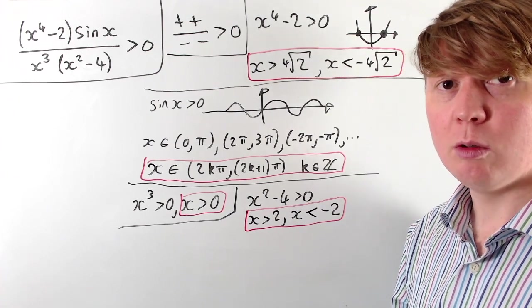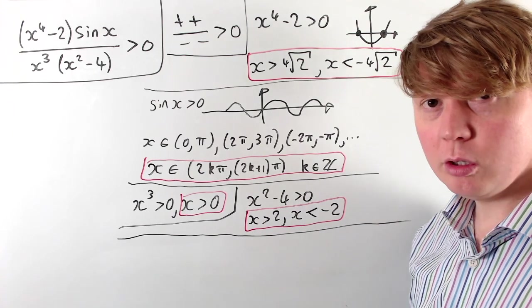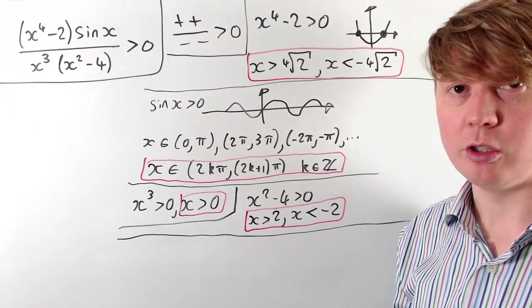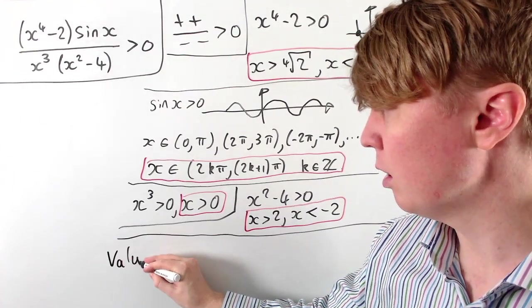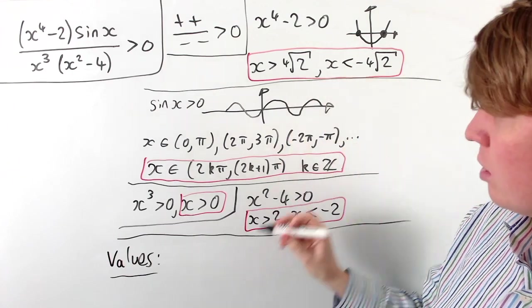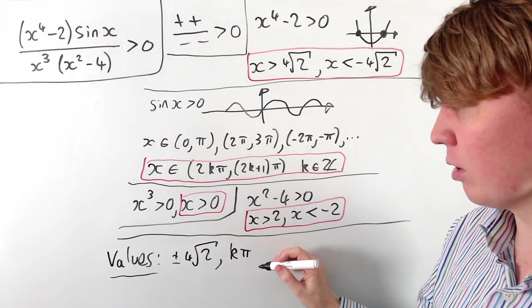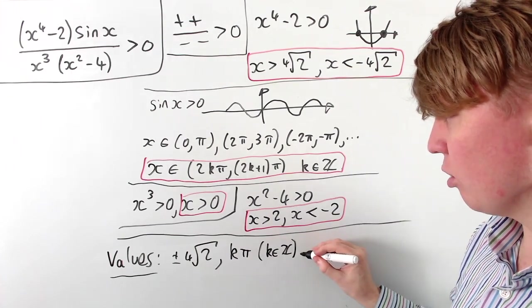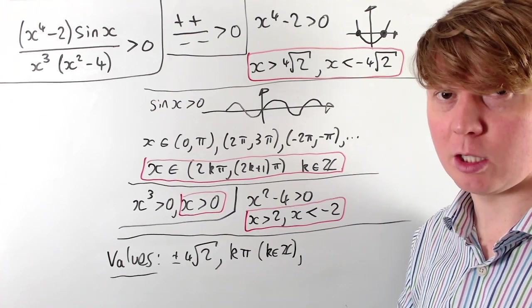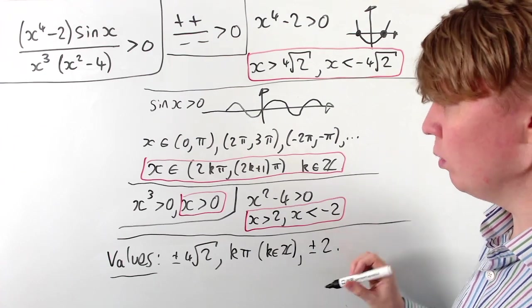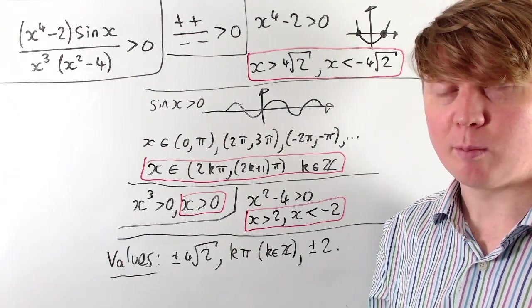Those are all the regions where each individual piece is positive. Next we'll put these into a sign table to see where each term is positive or negative, and determine whether the overall fraction is positive or negative. Our critical values — where the sign of each function changes — are the positive and negative fourth root of two, all integer multiples of pi (including odd and even, with zero included among those), and plus or minus two.